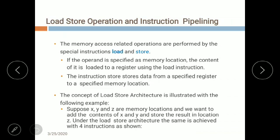Memory access-related operations are performed by special instructions called load and store. If the operand is specified as a memory location, the content of that memory location will be loaded into a register using the load instruction. The store instruction stores data from a specified register to a specified memory location. For example, consider three variables X, Y, and Z — we want to add X and Y and store the result in Z. Directly writing Z = X + Y as in C programming is not possible in load/store architecture; it requires four different instructions.